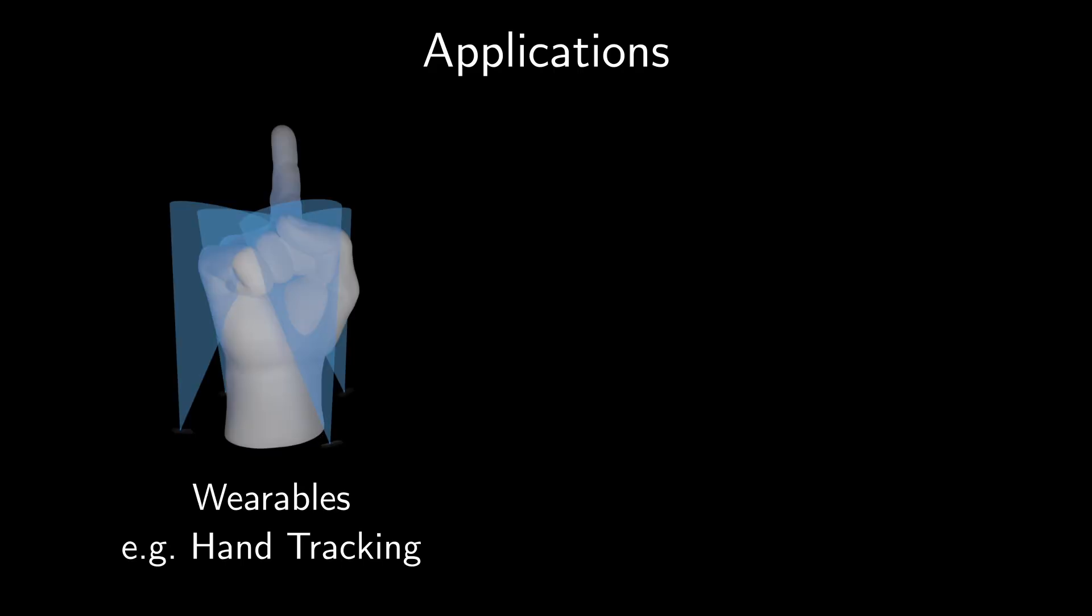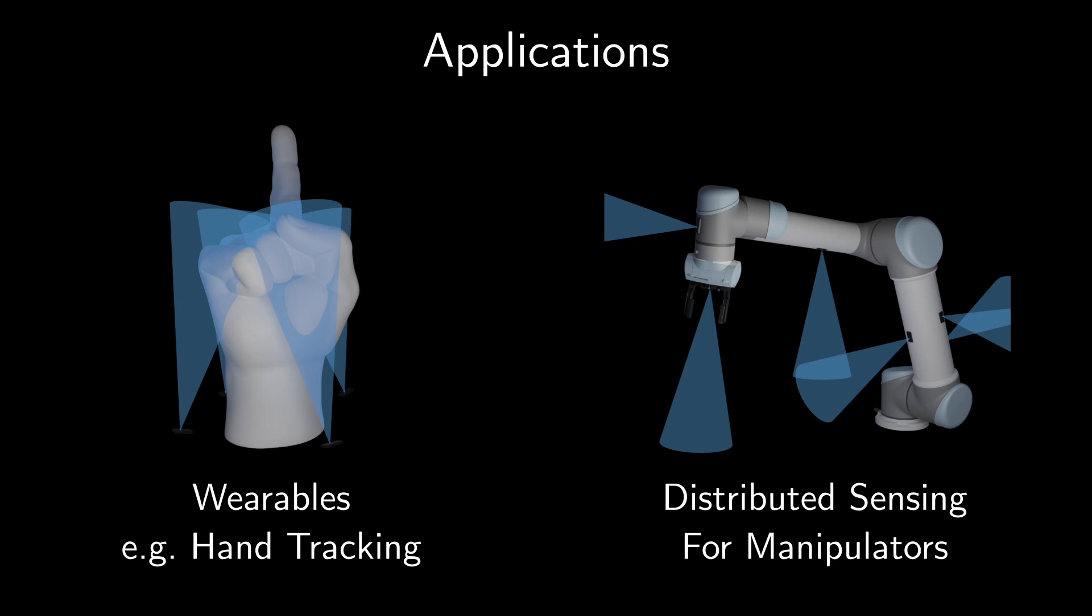Our method relies on known sensor poses and could be used in situations where relative sensor poses remain fixed over time, like arrays of sensors for wearable computing. It could also be used in situations where the relative motion of sensors is known, such as distributed sensing on robot manipulators.